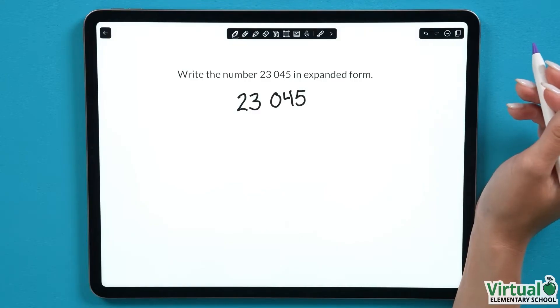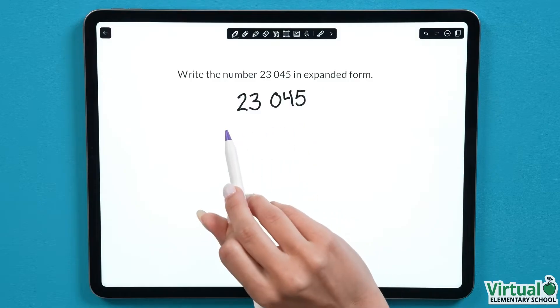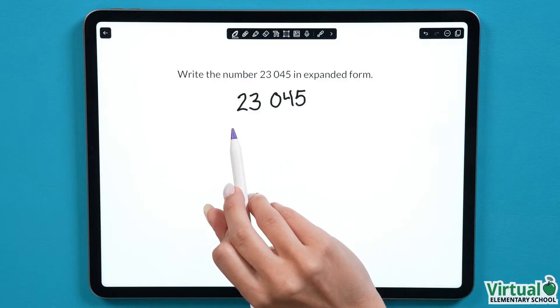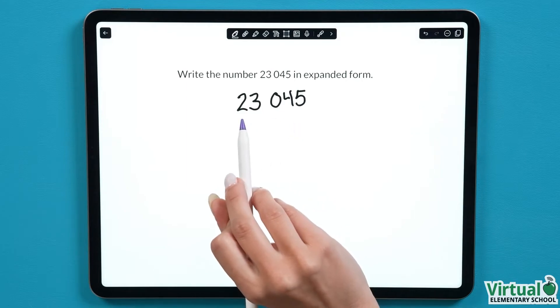Our first step for writing numbers in Expanded Form is to work from the left to the right. The numbers on the left have our highest place value, and as we move to the right they have a lower place value. Let's start by looking at the 2.